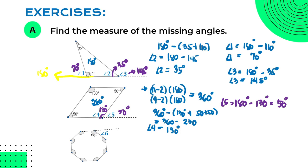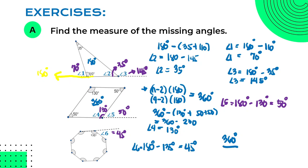For the last figure, we have a missing exterior angle. Since the interior angle is given, we simply subtract from 180 degrees, giving angle 6 equal to 45 degrees. Another way to compute this: since the figure is an octagon, divide the total sum of exterior angles (360 degrees) by 8, which also gives 45 degrees. This confirms the concept about interior and exterior angles.